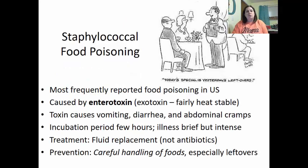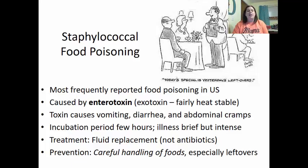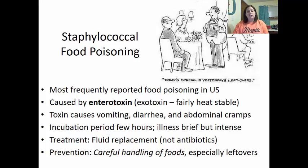Staphylococcal food poisoning is the most frequently reported food poisoning in the United States. It is caused by an enterotoxin — an exotoxin that is fairly heat stable, meaning it can survive heating and does affect the intestinal tract. The toxin causes vomiting, diarrhea, and abdominal cramps. The incubation period is a few hours; the illness is brief but very intense. Treatment is fluid replacement, not antibiotics. Prevention is careful handling of foods, especially leftovers — there's increased risk with custards, cream pies, and hams.